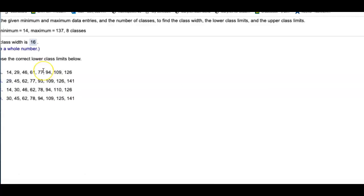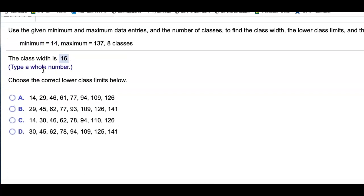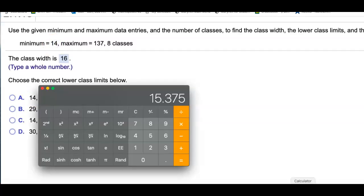What's next? Choose the correct lower class limits below. So the smallest number is 14. I'll go with 14 and then just keep adding 16 after that.